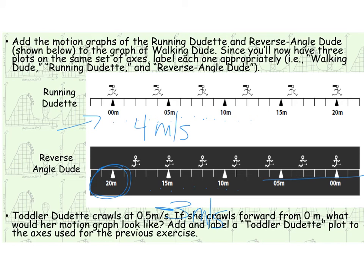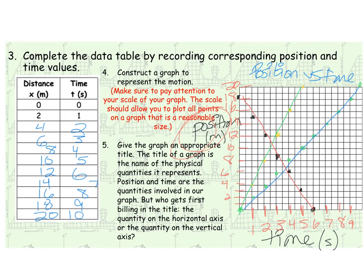So if you look on our graph here, this red line is our reverse angle dude. This green line right here is our running dudette. And then this right here was our original walking dude. So now you see them all graphed on here together. So you see reverse angle dude just started away and worked his way back towards. Whereas walking dude and running dudette, they are traveling in the opposite direction at different speeds.